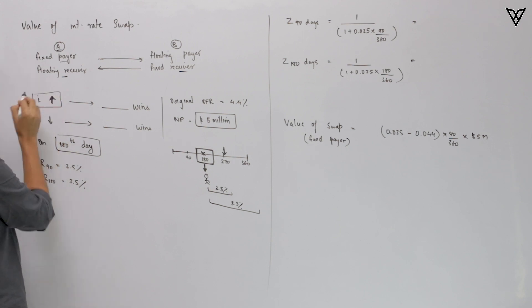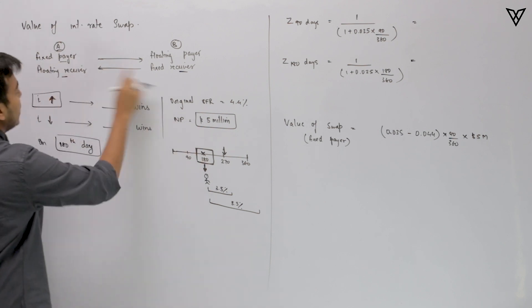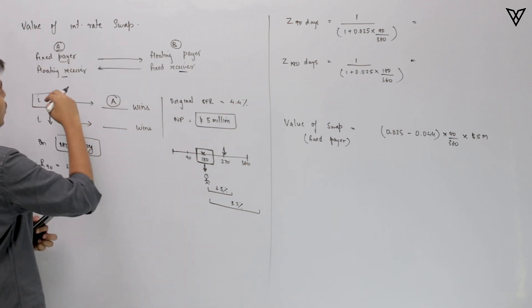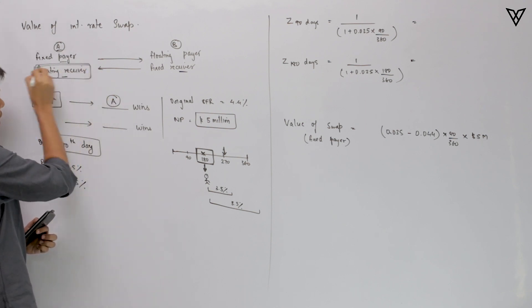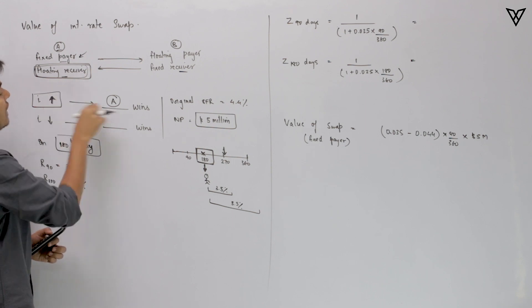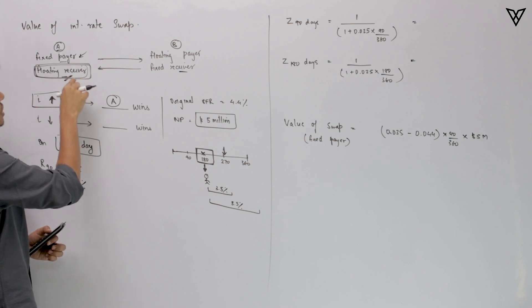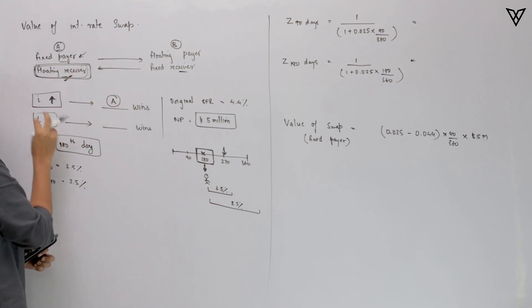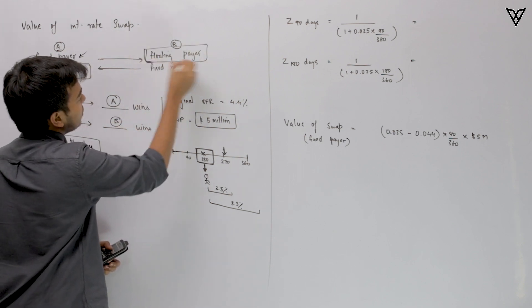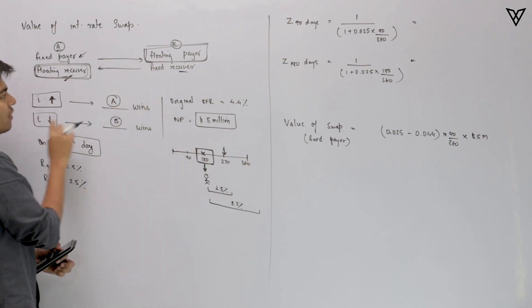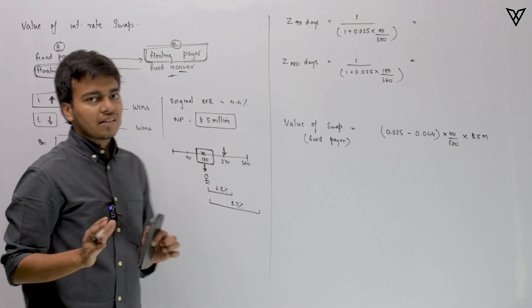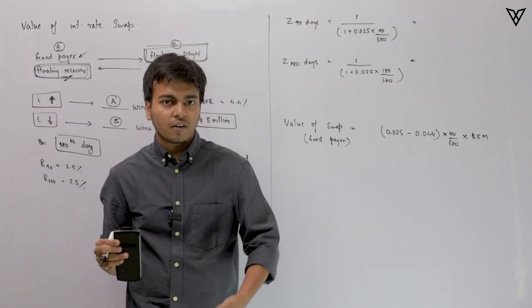If the interest rate increases, who gains — Party A or Party B? Party A gains, because interest rates have gone up and he is going to receive those higher floating interest rates, while he only pays the fixed rate that was pre-decided. The floating receiver gains when interest rates go up. Conversely, if interest rates go down, Party B wins because he is paying floating — he now pays the lowered interest rates — and since he is receiving fixed, Party B wins when rates fall.